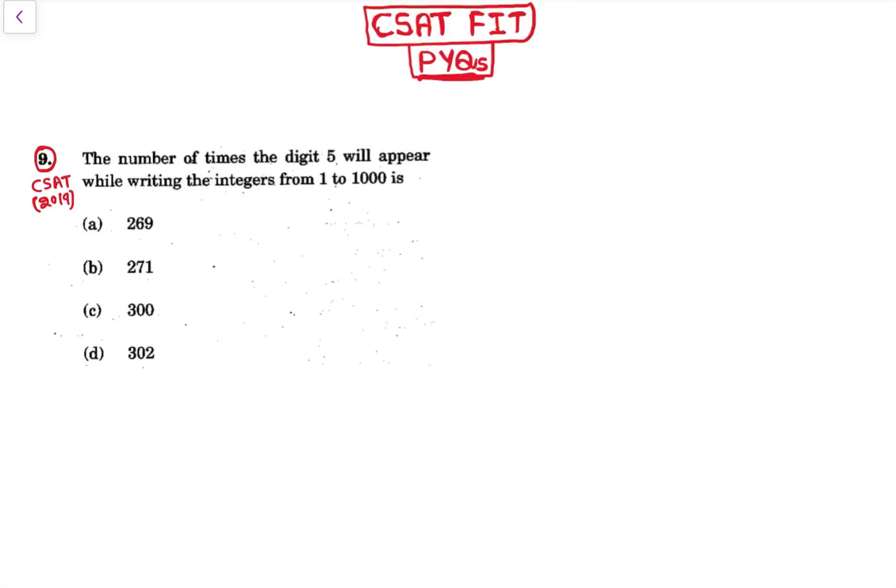Hello friends, welcome to CSAT with PYQs. This is a question asked in CSAT paper 2019. The number of times the digit 5 will appear while writing the integers from 1 to 1000. Let's take this as a three-digit number.